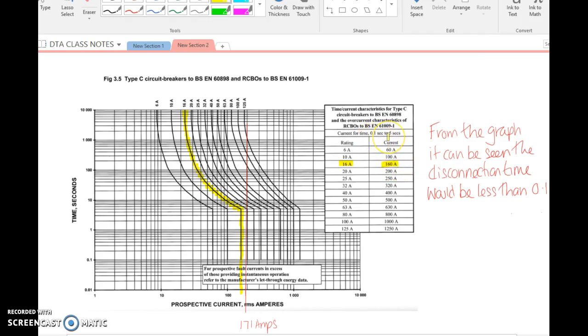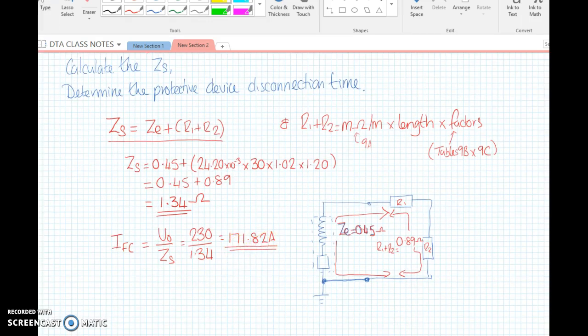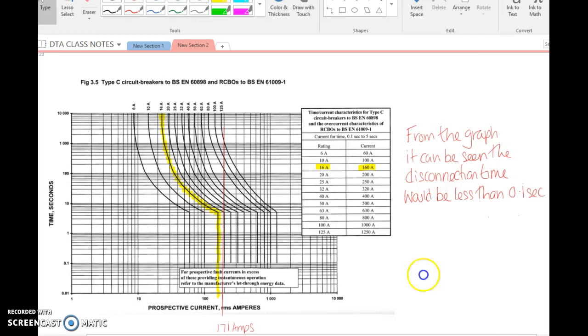You can see we're using the type C 60898. We look at the 16 amp curve, and on this table a 16 amp protective device needs a minimum fault current of 160 amps for it to go within 0.1 to 5 seconds. Ours is 171 amps because we just worked that out. If the fault current is greater than the minimum on here, then it would be an instant disconnection, so the disconnection time would be less than 0.1 seconds.